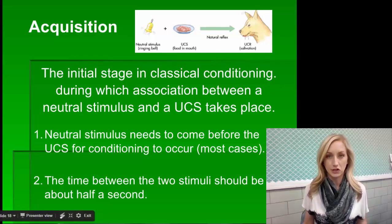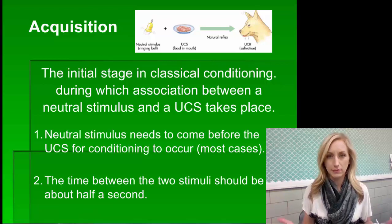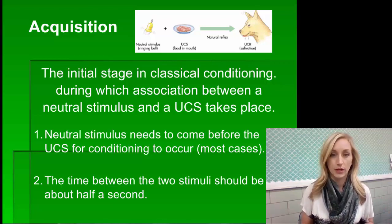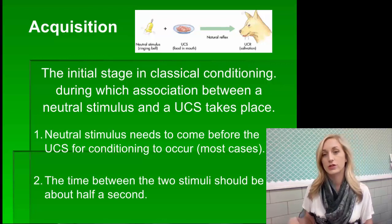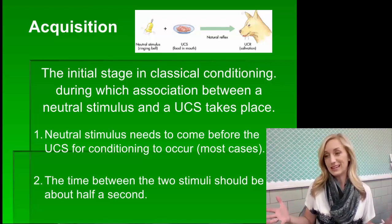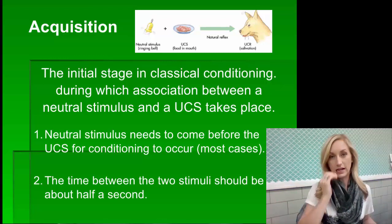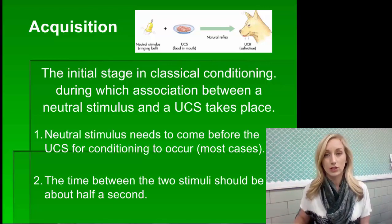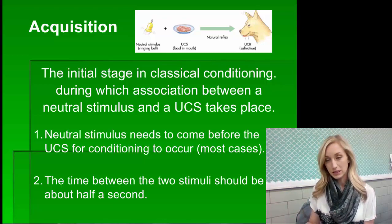For part two of our classical conditioning notes, let's talk about a pretty important vocabulary term: acquisition. It's kind of similar to association, which makes sense because acquisition is a stage where association happens. Here's the more laid-out definition: it's the initial stage in classical conditioning during which association between a neutral stimulus and an unconditioned stimulus takes place.